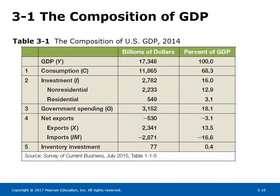The composition of U.S. GDP in 2014 as shown in Table 3.1 reveals: Consumption C is the largest component of GDP, accounting for over 68%. Government spending G accounted for 18.1% of GDP. Investment I accounted for 16% of GDP. Net exports X minus IM accounted for minus 3.1% of GDP.